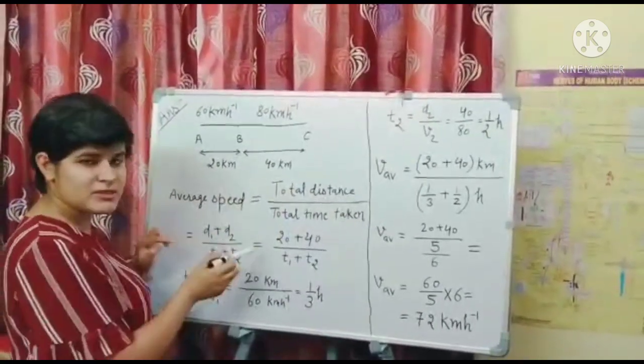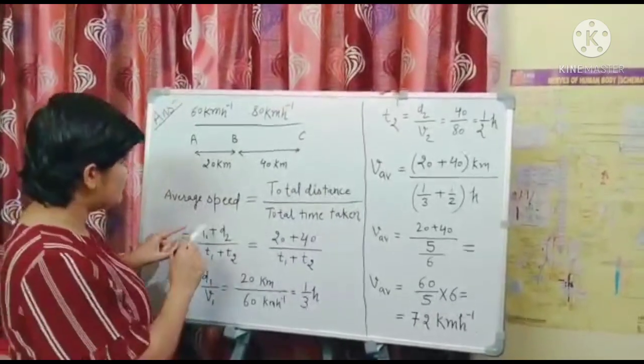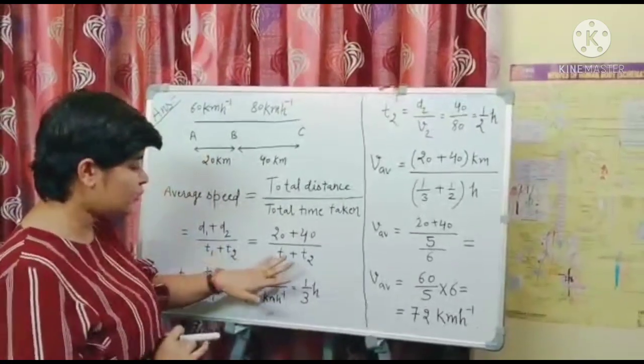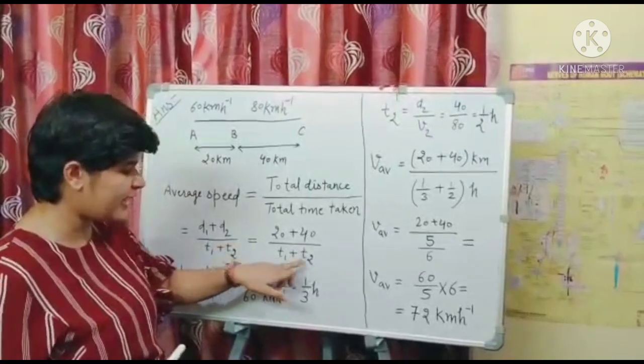Total distance will be D1 plus D2 and total time will be T1 plus T2. So D1, D2 is 20 and 40 we have given. Now we don't know the values of time. How to calculate the value of T1 and T2.